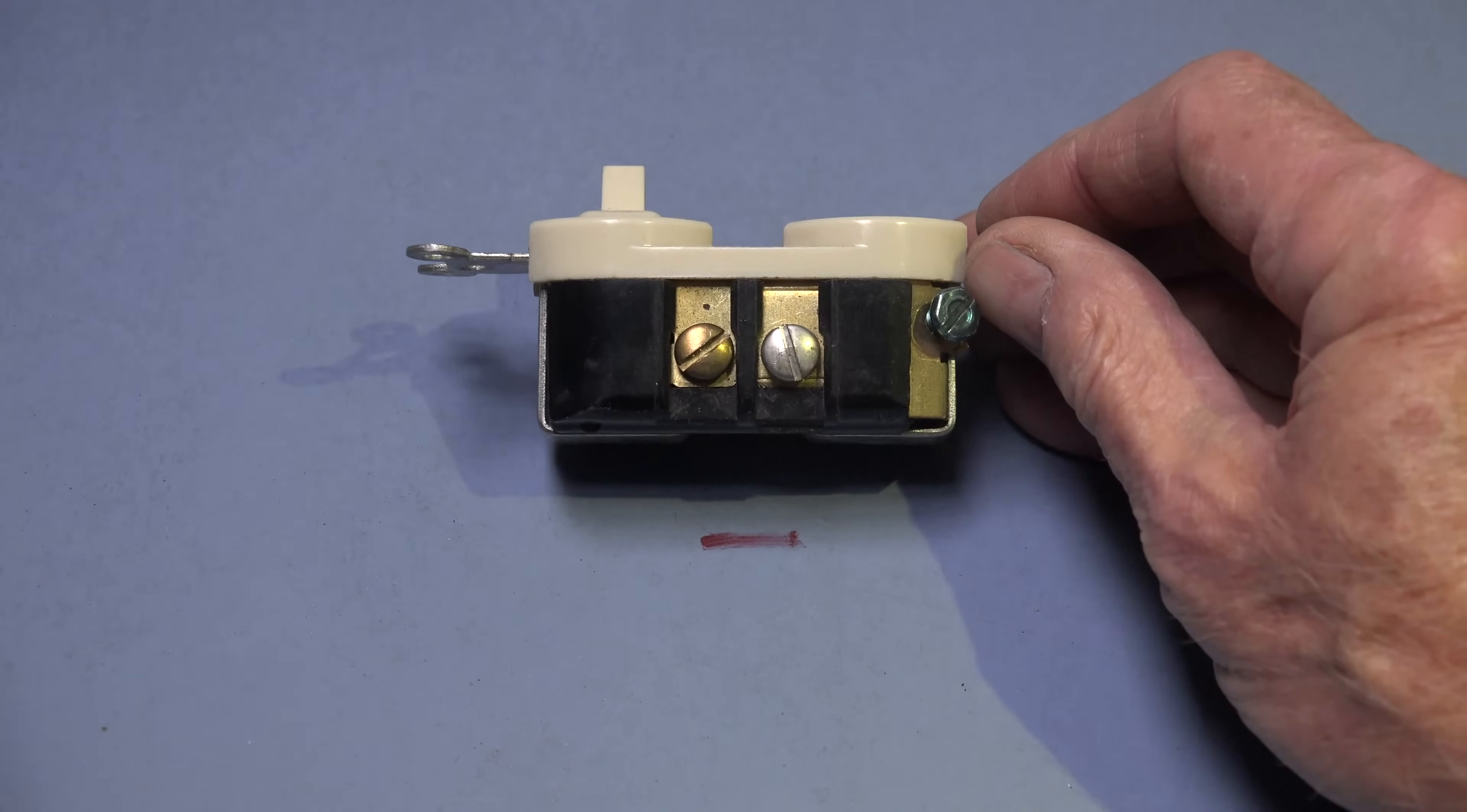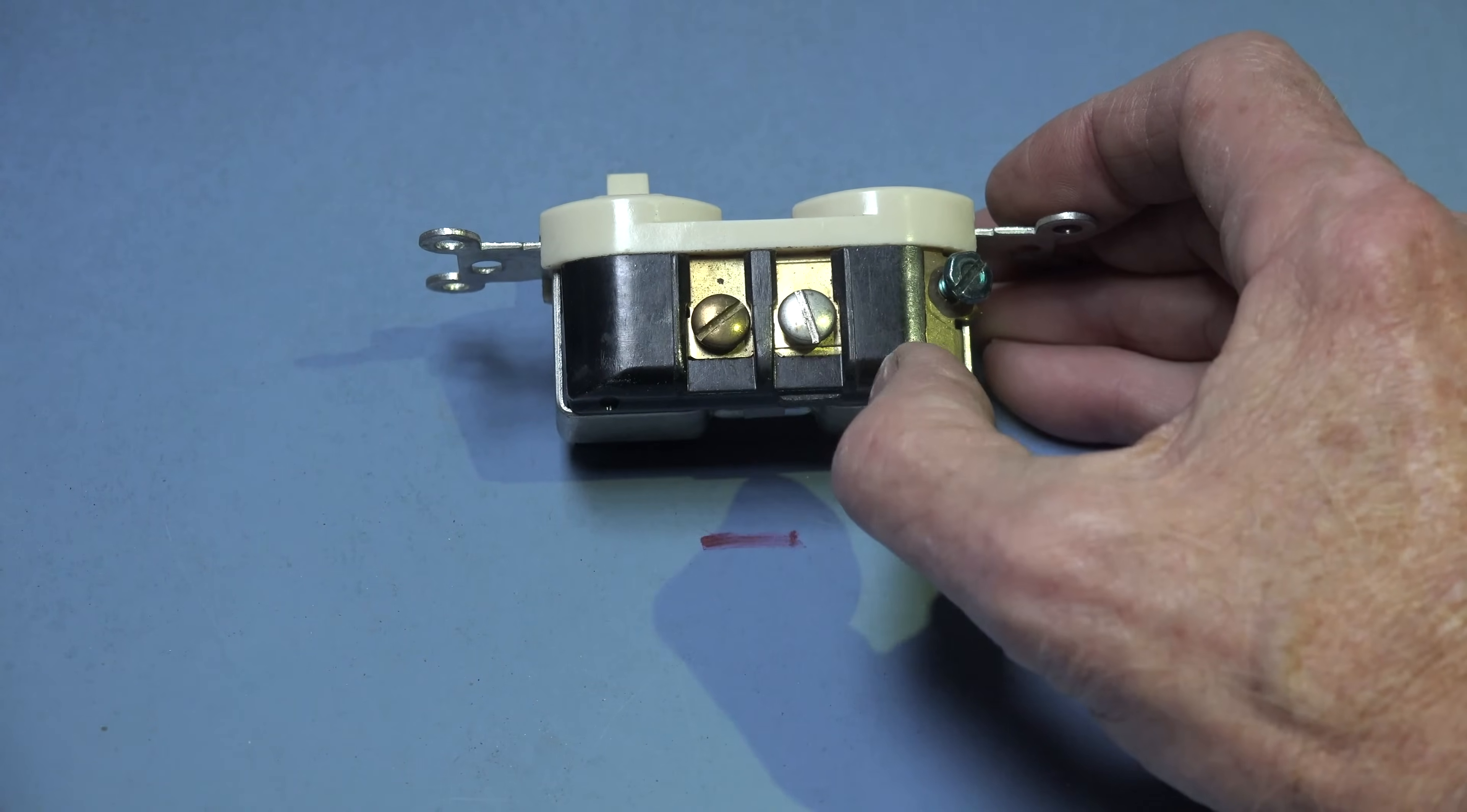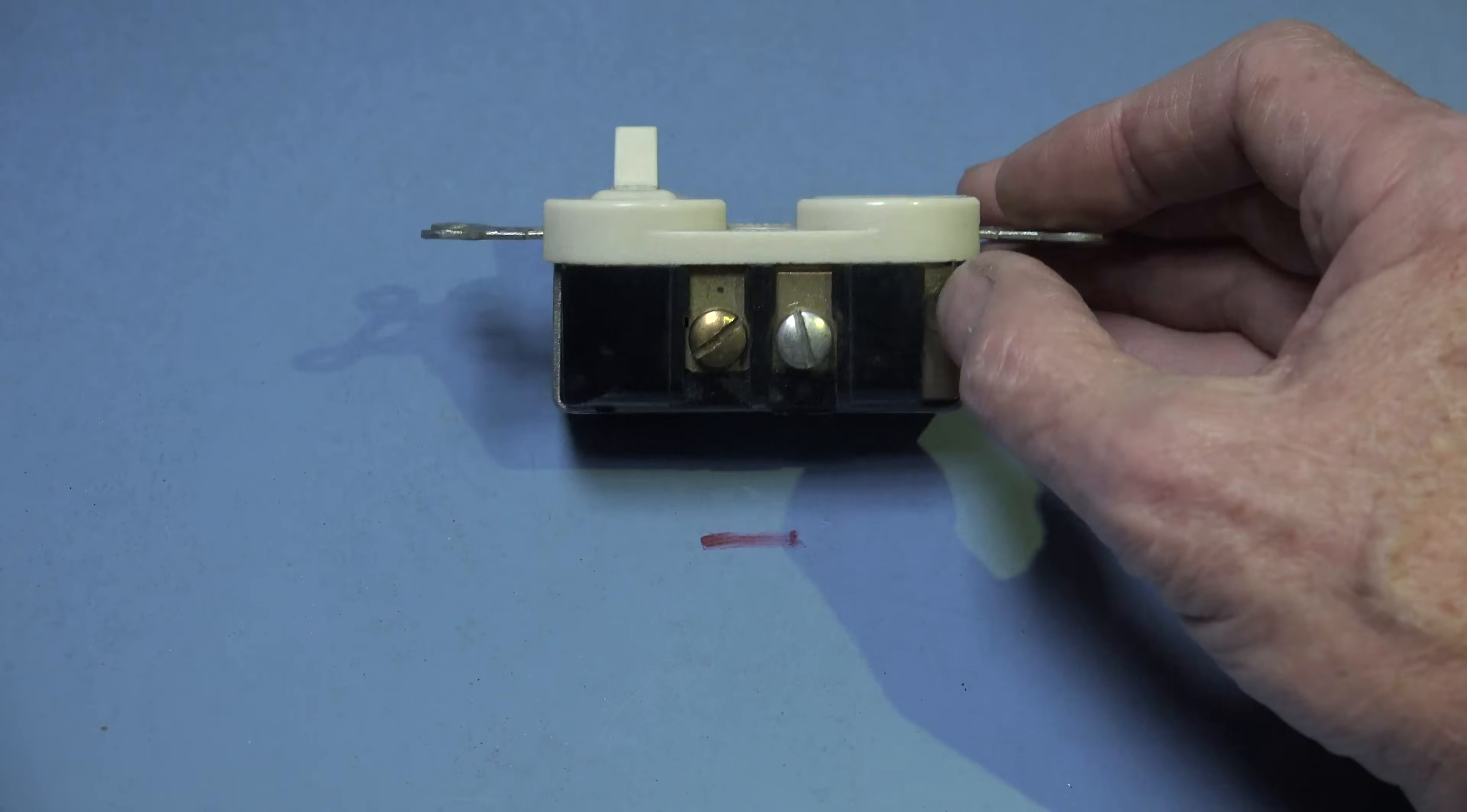Now first let's look at the terminals. On this side we have a brass terminal which is going to be a hot lead, a silver terminal which is going to be neutral, and green for ground.